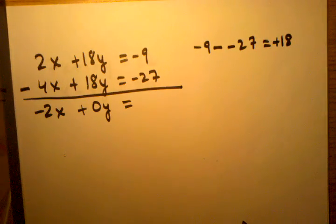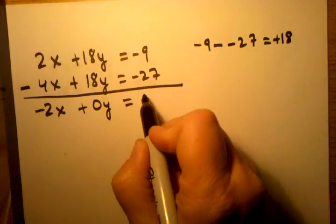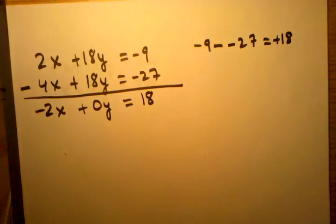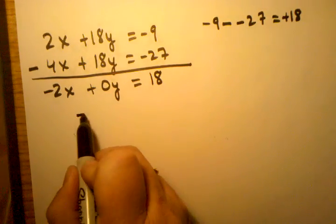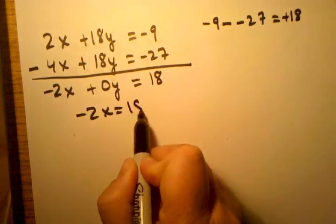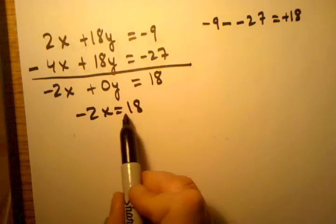So I have positive 18, and now it's going to go here. So now, I'm going to rewrite this quickly, just so I can see what I'm left with, now that I've eliminated a variable. So I have negative 2x equals 18.